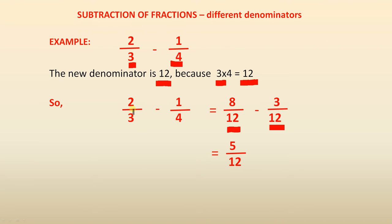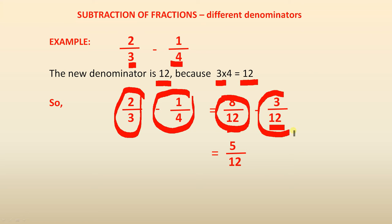How did we get from 2 over 3 to 8 over 12? Well that's very simple. 4 times 3 gives you 12. 4 times 2 gives you 8. So 2 over 3 is similar to 8 over 12. How did we get from 1 over 4 to 3 over 12? That's simple. 3 times 4 gives you 12, and 3 times 1 gives you 3. So 1 over 4 is similar to 3 over 12.